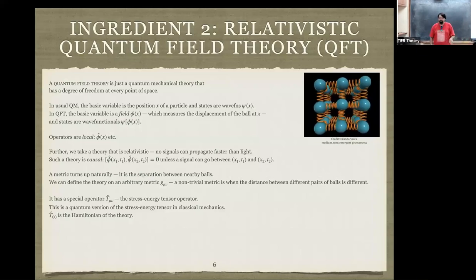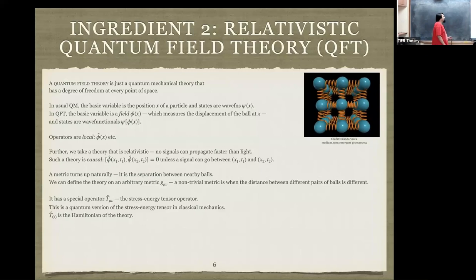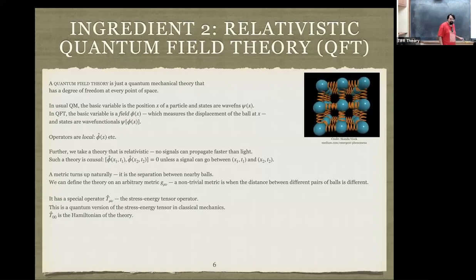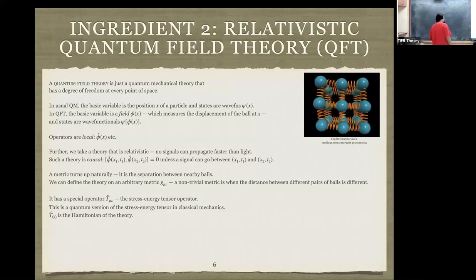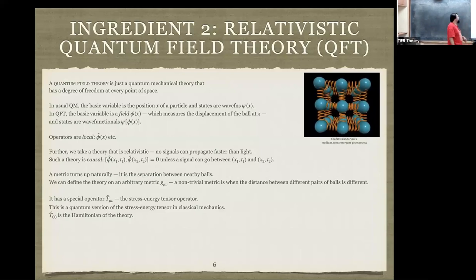The main ingredient that distinguishes QFT from quantum mechanics with many degrees of freedom is that operators are local — phi-hat(x) measures the position of the ball at x. The thing that makes it completely different is relativity: no signal can propagate faster than light. This means local operators at two points that cannot exchange signals must commute, because a non-zero commutator implies a non-zero signal. There is a natural metric here — the mean distance between two nearby balls — and the actual distance fluctuates, but setting phi(x) equals zero gives the metric.